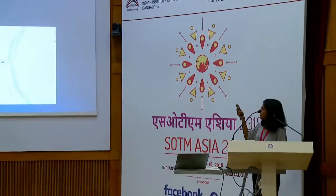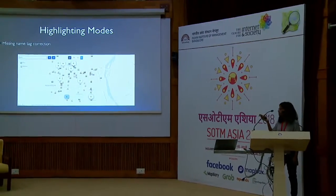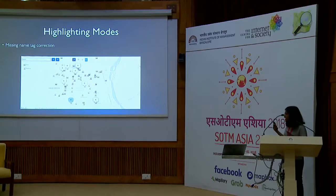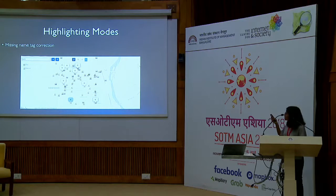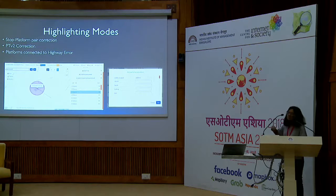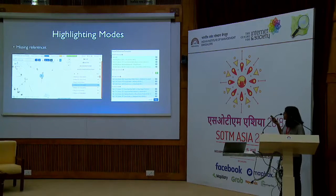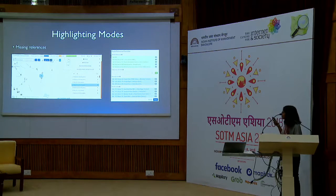Coming to highlighting modes — for example, missing name tag correction. As soon as you turn on this highlighting mode, all the stops and platforms which do not have a name tag are highlighted. You can easily click on any one of them and enter the name. We have more highlighting modes, like if a stop does not have a corresponding platform they will be highlighted, and also missing references — if the tag ref is incomplete. The editor is aimed to be very user friendly.